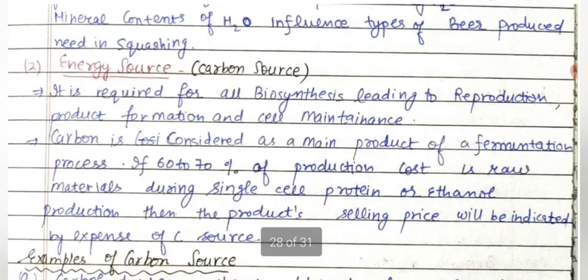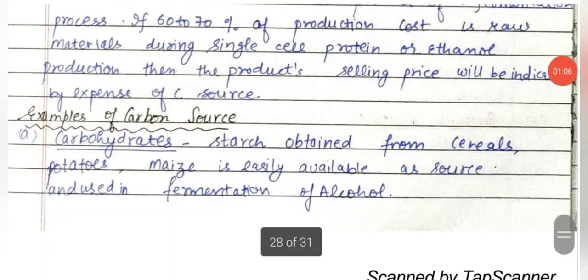Next is the energy source. Micro-organisms need an energy source, which is the carbon source. It is required for all biosynthesis leading to reproduction, product formation, and cell maintenance of the microorganisms. Carbon is considered the main component of the fermentation process. If 60–70% of the production cost is raw material, the product selling price is largely indicated by the expense of the carbon source.